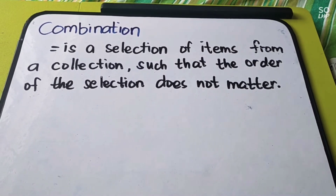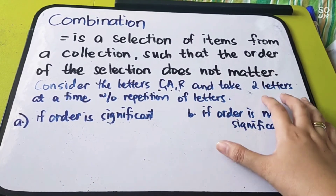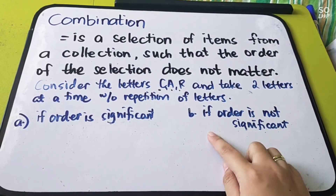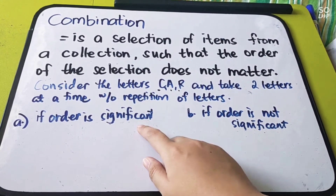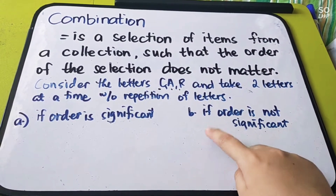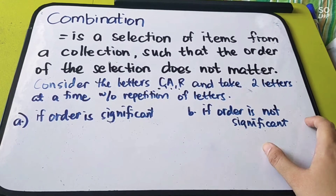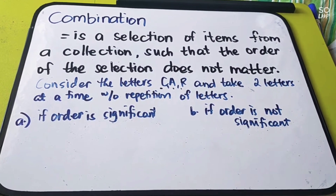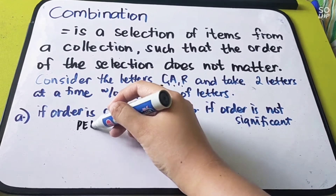For example, consider the letters C-A-R and take two letters at a time without repetition. We have two situations here. The first one: if order is significant. And letter B: if order is not significant. When order is significant, you need to list all arrangements. That is what you call permutation.